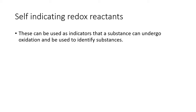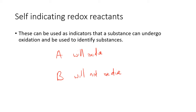So how would you use these? These self-indicating substances can be used to identify substances that undergo oxidation. Say you have substance A and substance B, and you know that A will oxidize but B will not. If they look the same and you need a chemical test to tell them apart, you add a bit of the self-indicating redox reactant — the dichromate or permanganate. When added to both, A will cause a color change and B will not. Take a sample of each and add a small amount of acidified potassium dichromate or potassium permanganate.